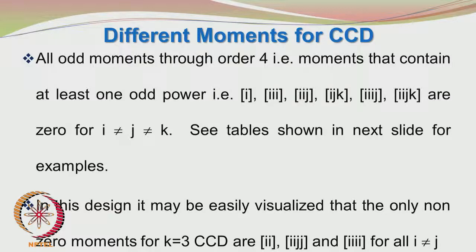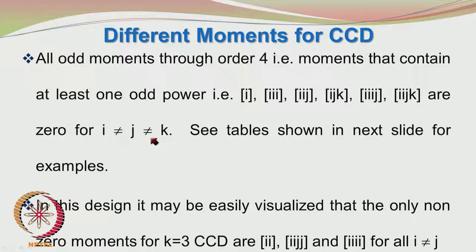All odd moments through order 4 — that is, moments that contain at least one odd power — such as i, i³, i²j (where the power of j is 1), ijk (where all have odd powers), i³j (where 3 and 1 are both odd exponents), and i²jk are all 0 for i not equal to j not equal to k. The tables shown next will illustrate this concept.